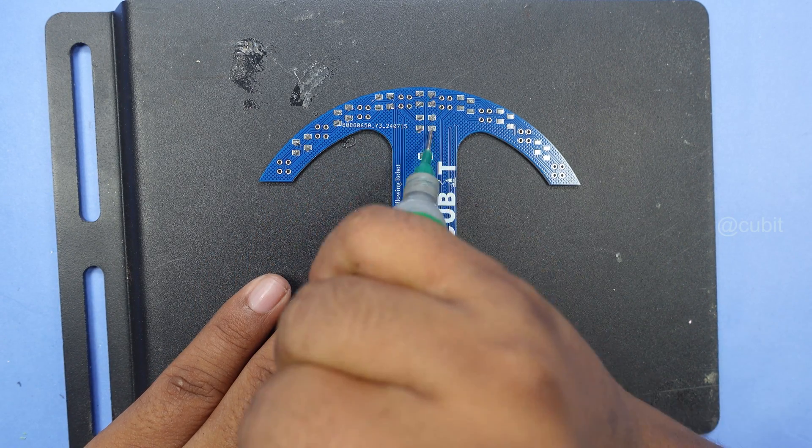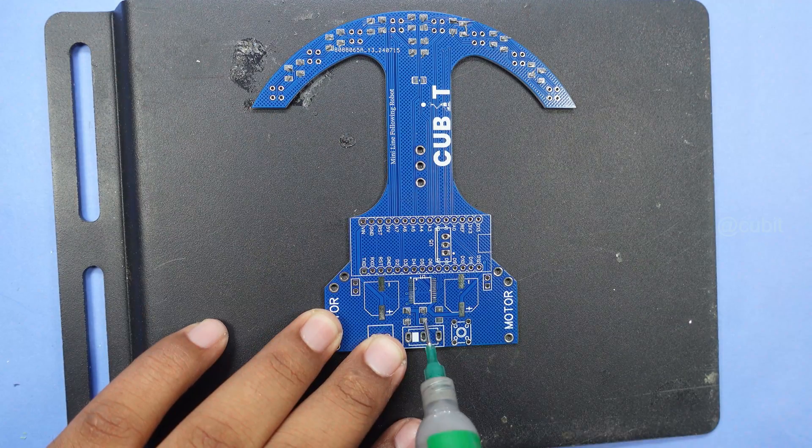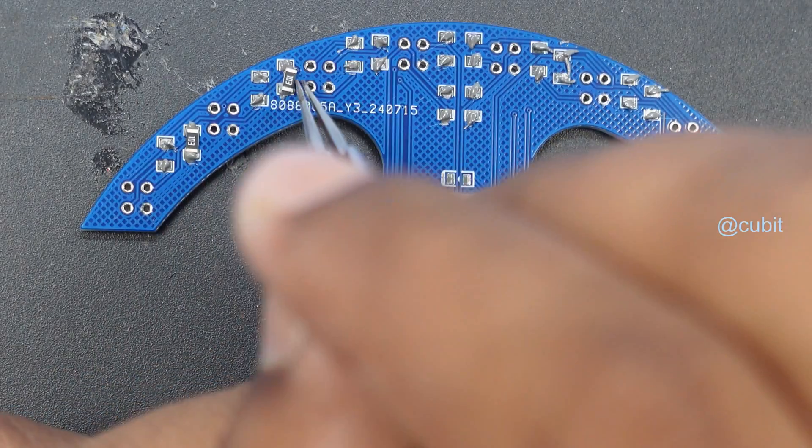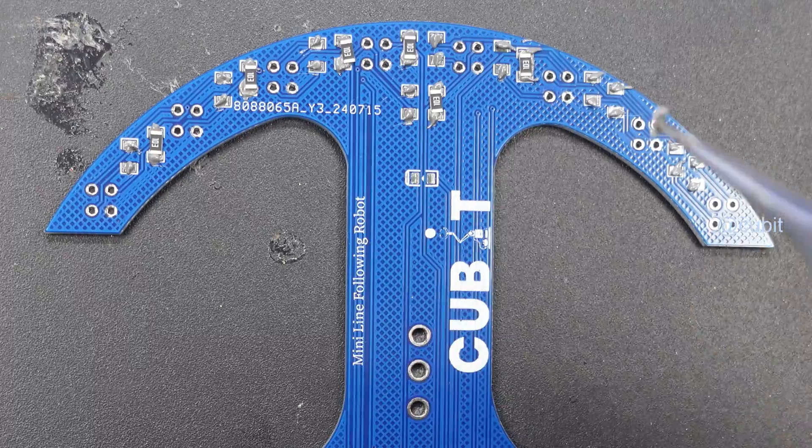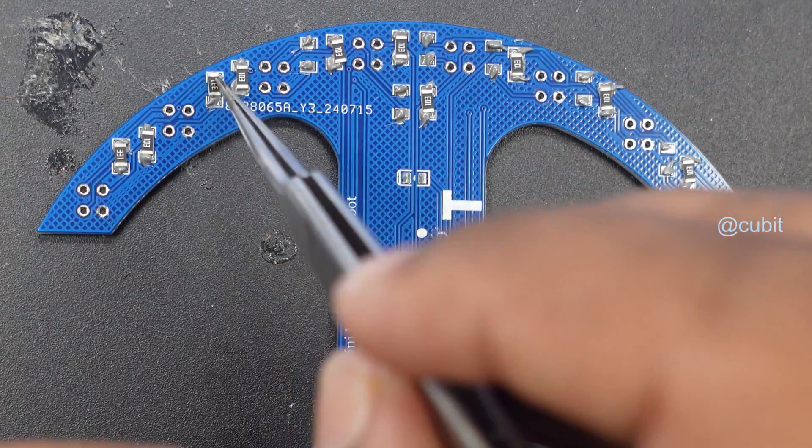We begin by assembling the SMD components. First, we apply solder paste to the SMD footprints on the PCB. After that, we place a 10 kilo-ohm resistor, followed by a 330 ohm resistor.